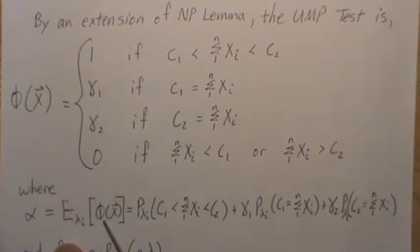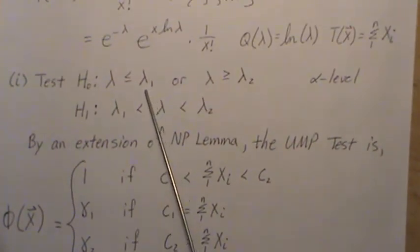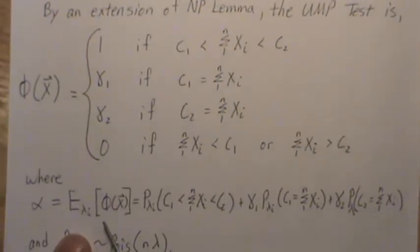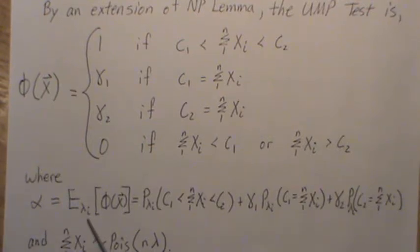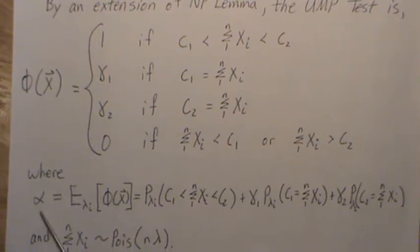So it's expected value of the test function assuming lambda 1 is true and we get those from here. Neyman-Pearson put lambda 1, I say lambda i but it's lambda 1 or lambda 2. So the expected value of the test function assuming lambda 1 is true is alpha. And the expected value of the test function assuming lambda 2 is the true parameter, that has to equal alpha.